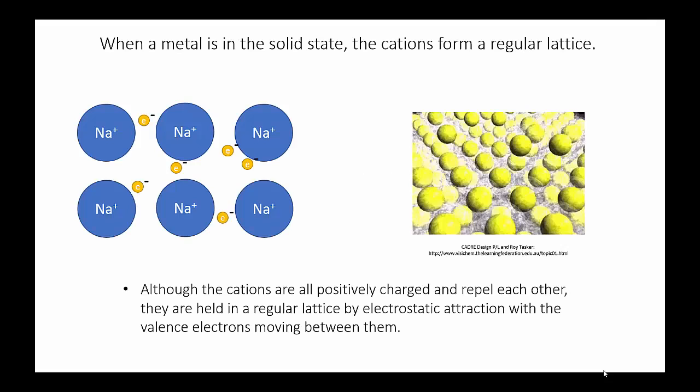We know that in metallic bonding, the metal atoms lose their valence electrons and become ions. These ions arrange themselves into a regular lattice. The structure of the lattice is like that of an ionic solid, but all of the ions are positive.